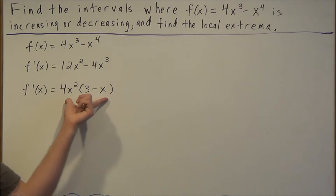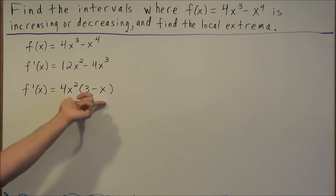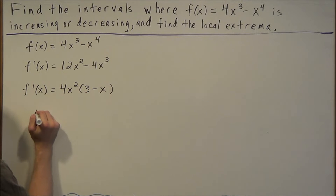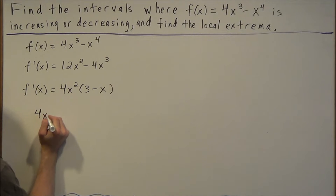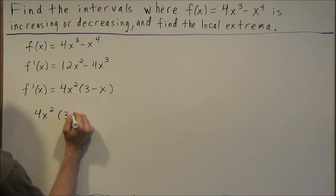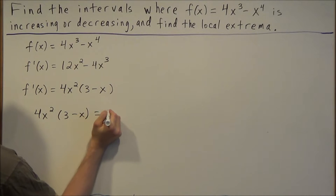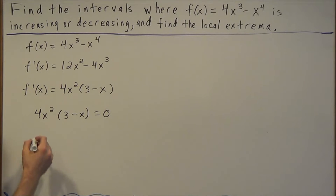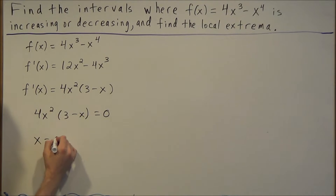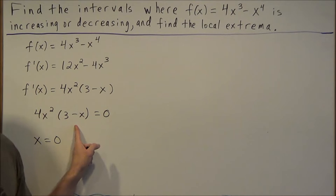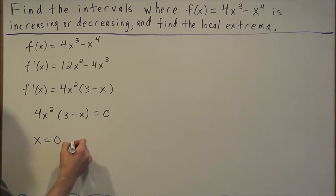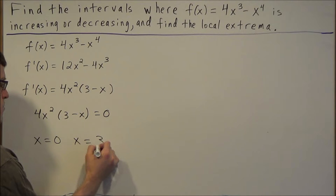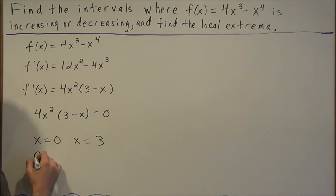We set this derivative equal to zero to find the critical points: 4x squared times 3 minus x equals zero. The first factor 4x squared equals zero when x equals zero, and the second factor 3 minus x equals zero when x equals 3. These values represent our critical points.